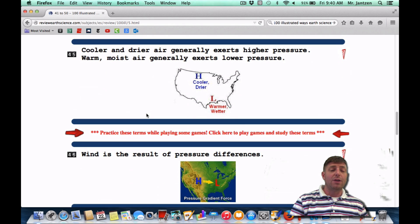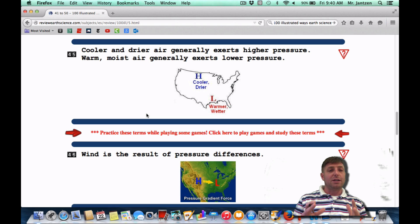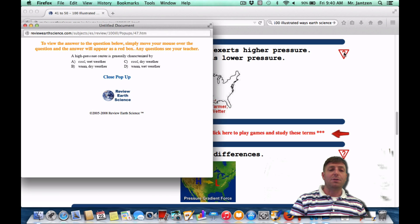Number 45, cooler and drier air generally exerts higher pressure. Warm, moist air generally exerts lower pressure. I think of high pressure being happy weather, low pressure being lousy weather. High pressure, you're going to have the molecules kind of closer together. Low pressure, the molecules are going to be a little bit further apart. If they're closer together, you're going to have higher pressure. And if they're farther apart, then the air is going to have a tendency to rise and it's going to be lower pressure. As a region's question, it says a high pressure center is usually characterized by what? It's going to be generally cooler and drier, or think of just happier weather. Or choice C.